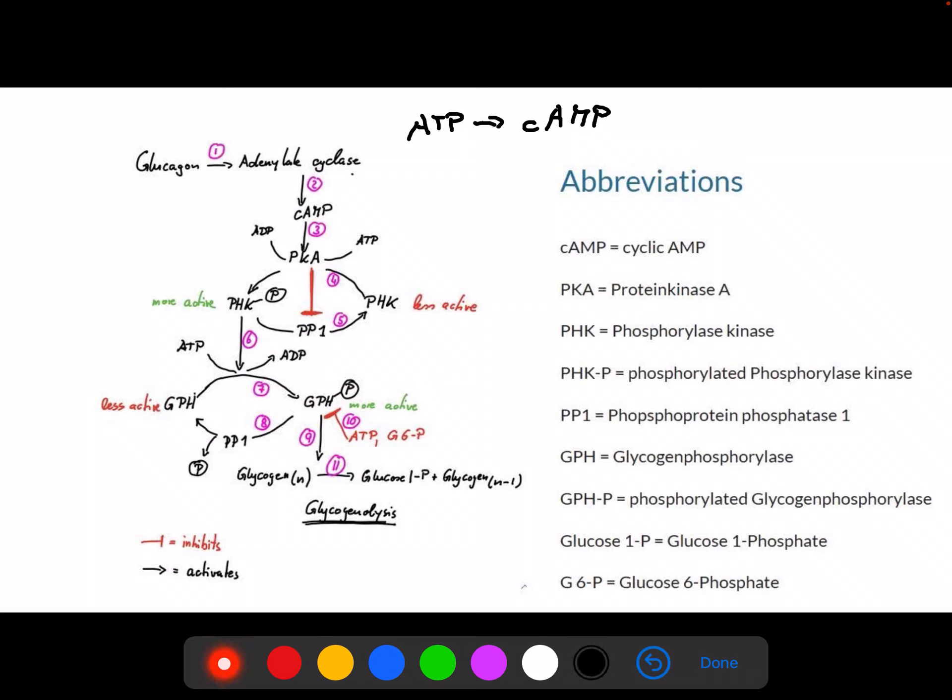Because we have the same molecule here, PP1 and PP1 here as well, and PKA, protein kinase A, would also inhibit this reverse reaction from active glycogen phosphorylase into the less active unphosphorylated glycogen phosphorylase. This is basically how the liver can regulate the amount of glucose that is in the blood.